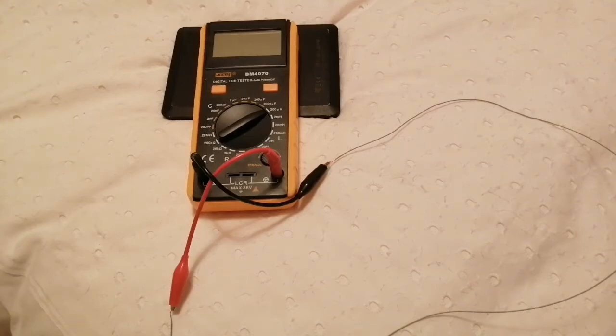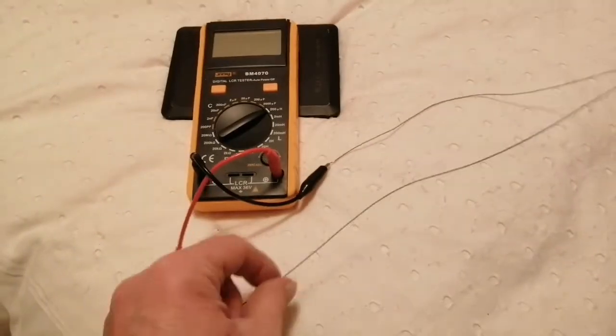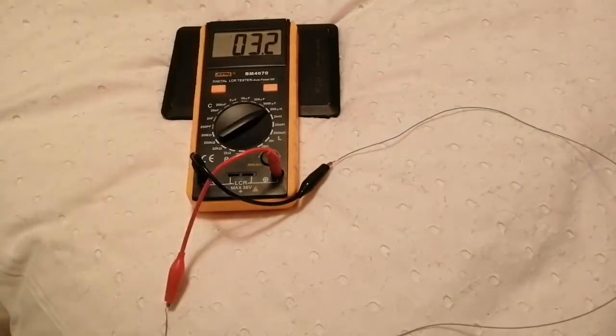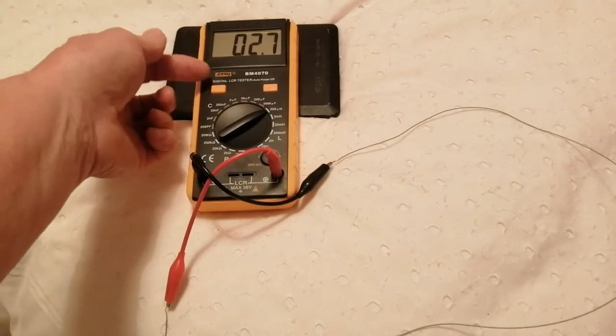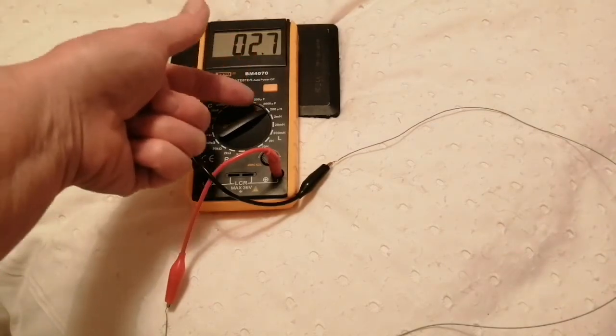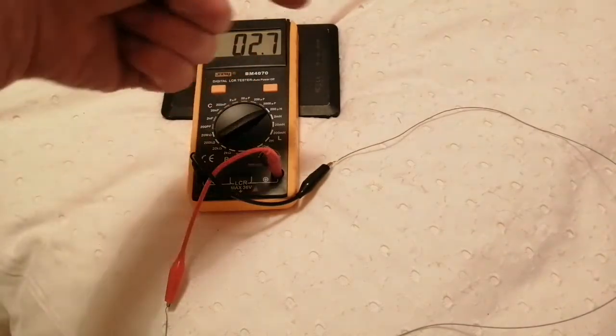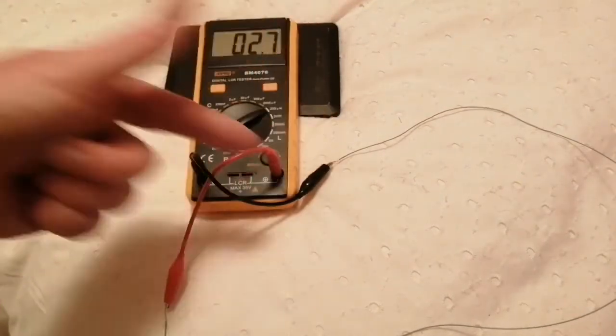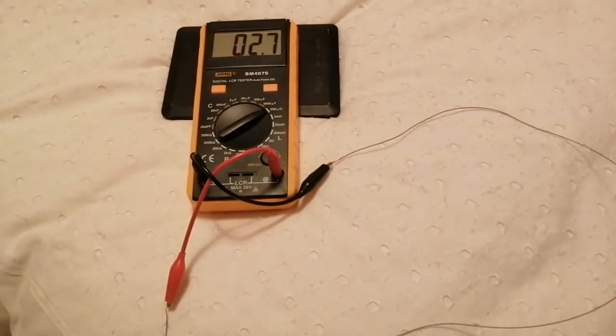Welcome once again to my makeshift laboratory on the corner of my bed. Today I want to have a play with multiple turns through ferrite rings. I've got a piece of wire here, random length. This is a digital LCR tester on the 200 microhenry range, and it says this is 2.7 microhenries including the leads. The exact value isn't really important.